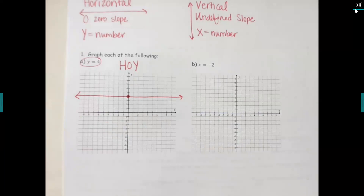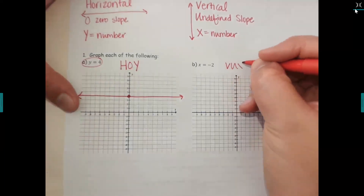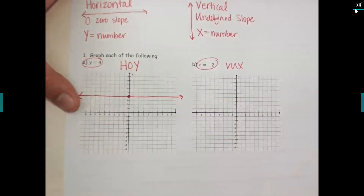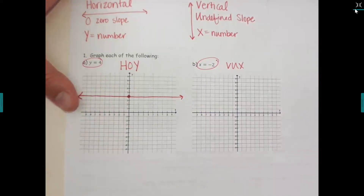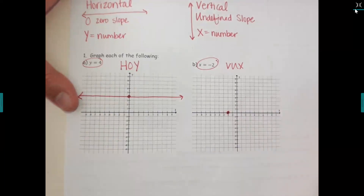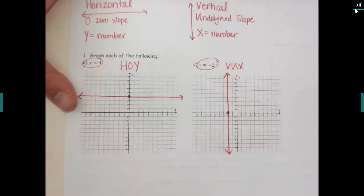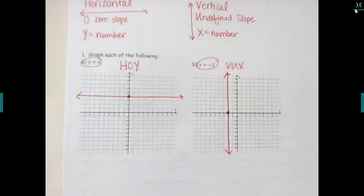For the second example, it's an x-equals equation, which means it's a VUX. If it's a VUX, go to your x-value and draw a vertical line through it — so go to negative two right here and draw it straight up and down. Remember: HOY gives a zero slope, VUX gives an undefined slope.